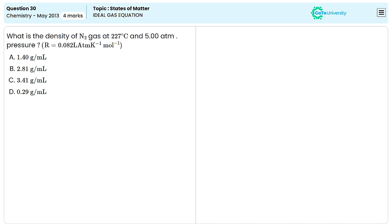In this question, you have been asked to find out the density of nitrogen gas at a temperature 227 degrees Celsius and 5 atm pressure.